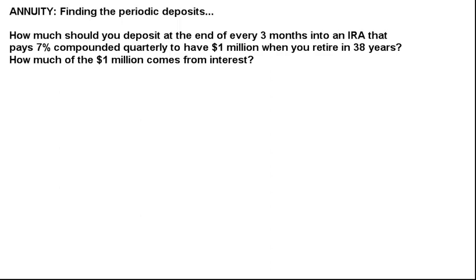How much should you deposit at the end of every three months? Let me pause right there for a second. When you read every three months, I want you to know that n is 4. Every three months is a quarter, so this is really another way of saying quarterly. There's another hint in this problem, too, and I'll get to that in a second.